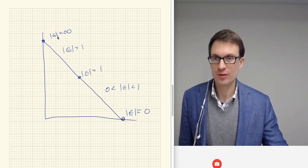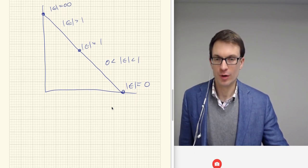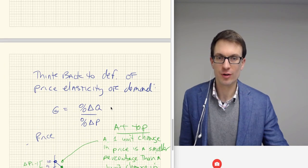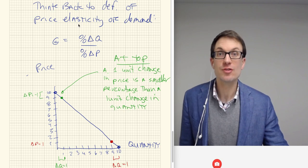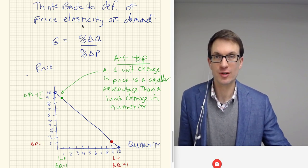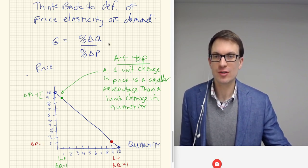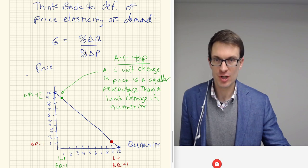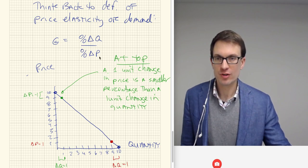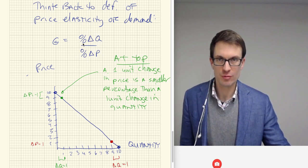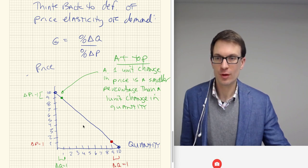So why is it that the top is elastic and the bottom is inelastic? I can show you this with a numerical example, probably best. But first, let's start off thinking about our definition of price elasticity of demand, which is the percentage change in quantity divided by percentage change in price. So we're interested in: if there's a price change, what's the responsiveness in terms of the quantity change?